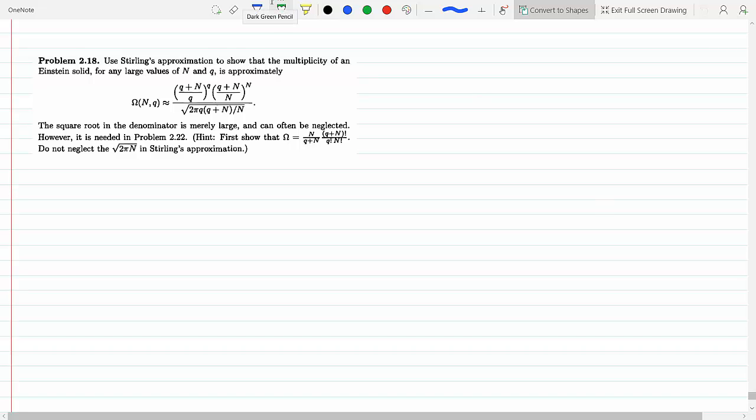I will do this problem to prove this important result that we will be using in other problems, where we will use Sterling's approximation to show that the multiplicity of an Einstein solid when we are dealing with large values of n and q is approximately this.